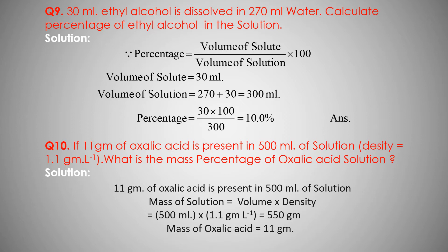Mass of solution equals volume of solution into density. Volume of solution is 500 milliliter, and density is 1.1 gram per liter. So mass of solution equals 500 into 1.1 equals 550 gram. So mass of solution is 550 gram.